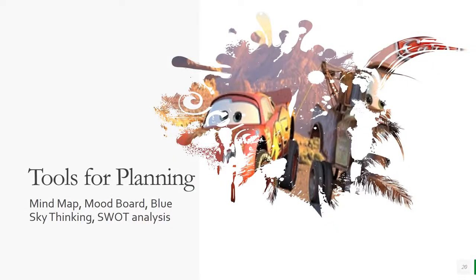The final thing to look at for Learning Outcome 2 is planning. Now that you know what the client wants, how to analyse a client brief, and you understand the audience considerations, you need to think about how to plan what you're going to do. The tools for planning are: mind map, mood board, blue sky thinking, and SWOT analysis.